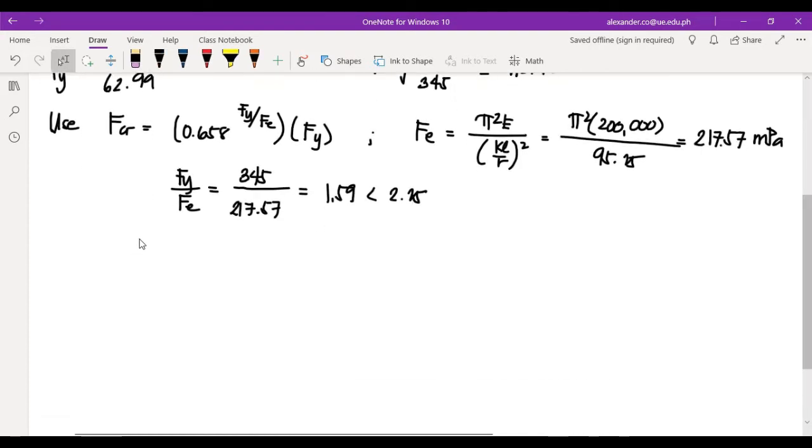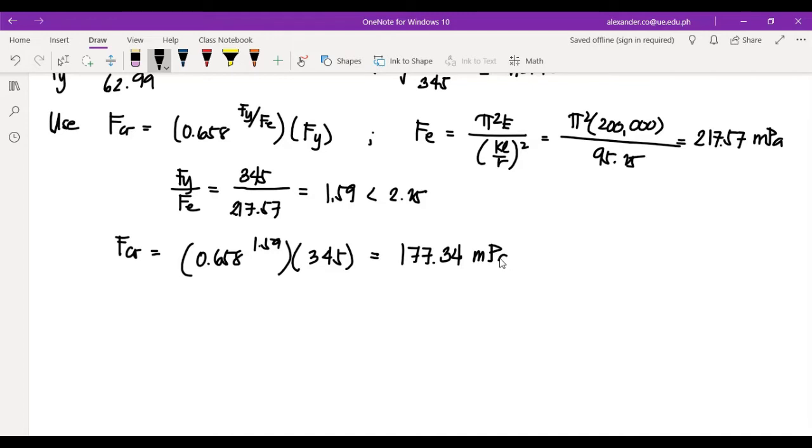So, we will use 1.59. If this value exceeds 2.25, you will use 2.25 for Fy over Fe here. Since it didn't exceed, you will use 1.59. Okay, so we can get now the critical buckling stress. So, the critical buckling stress equals 0.658 raised to 1.59 times 345. The answer is 177.34 megapascals.